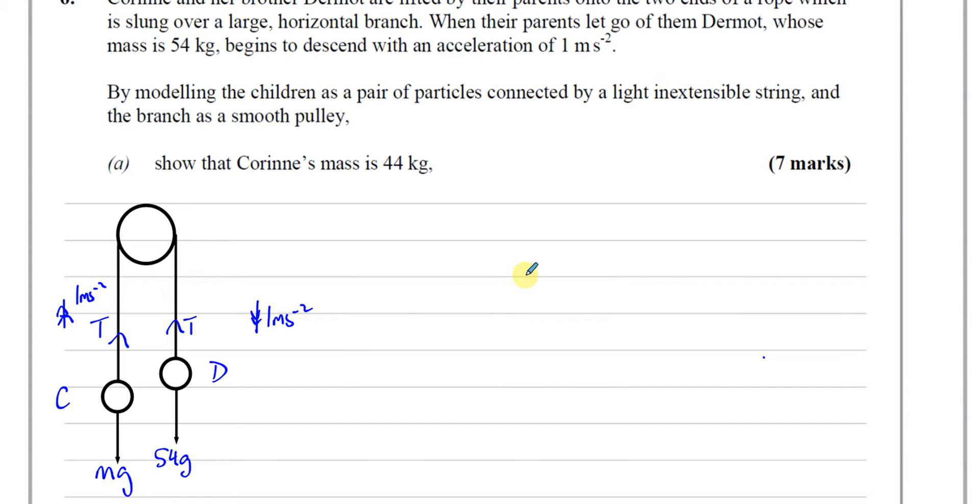Let's start with Corinne. She's going upwards, so for Corinne I'll take up as positive and she's moving upwards. The resultant force is T minus MG because T is up and MG is down. And that's equal to the mass times acceleration, which is M times A. A is one.